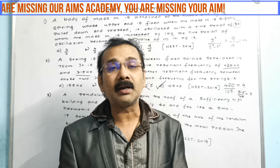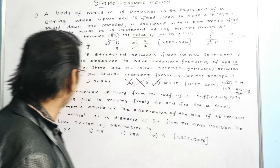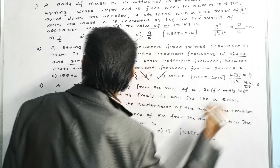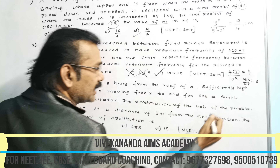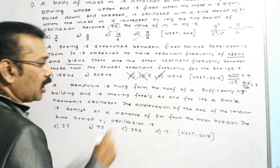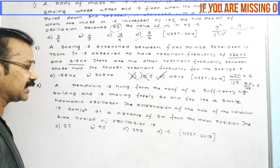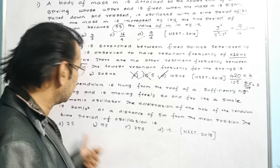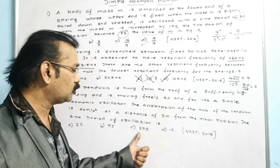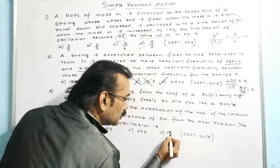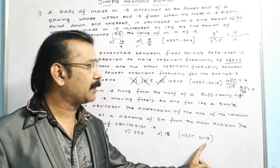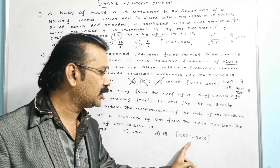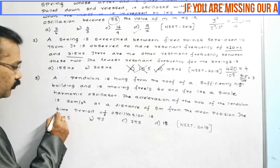Let us go for the third magical trick in the lesson of Simple Harmonic Motion. See the third question: a pendulum is hung from the roof of a sufficiently high building and is moving freely to and fro like a simple harmonic oscillator. The acceleration of the bob of the pendulum is 20 meter per second squared at a distance of 5 meters from the mean position. The time period of oscillation is asked — this question was asked in NEET 2018.